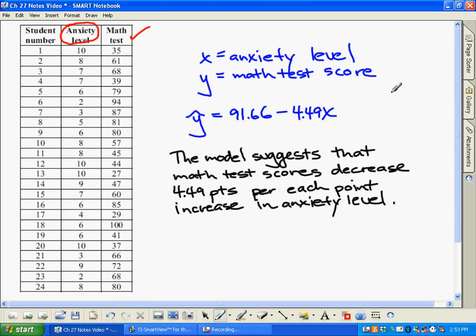We ran linear regression and we found out the equation of the line that best fit was right here. And then we went ahead and we put the slope into context, so the model suggests that math test scores decrease 4.49 points per each point increase in anxiety level.